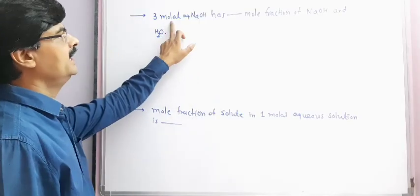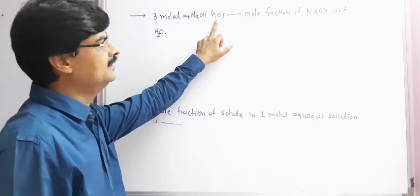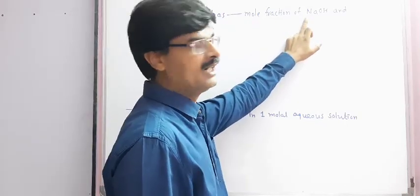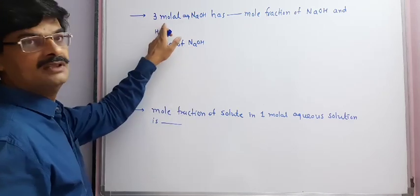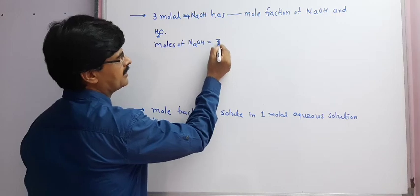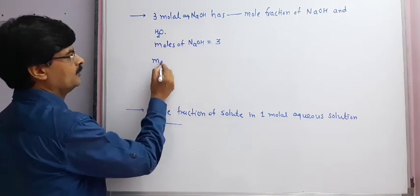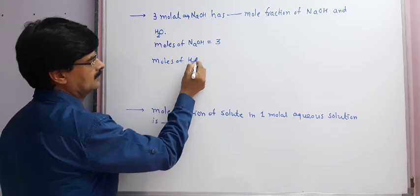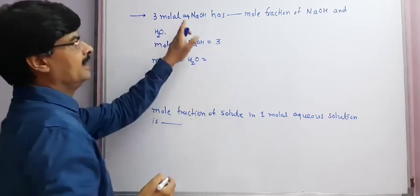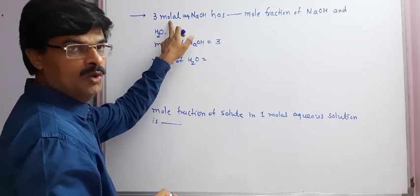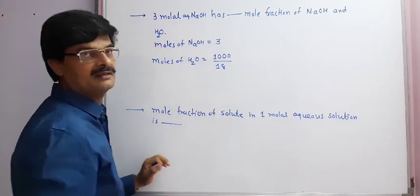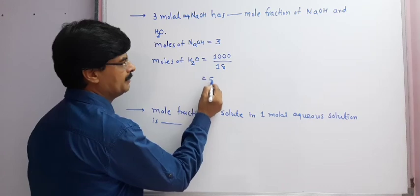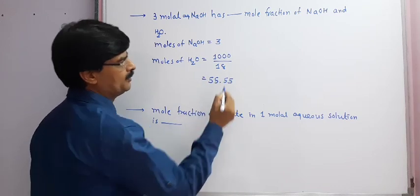In this question, a 3 molar aqueous NaOH solution is given and we have to find the mole fraction of NaOH and H₂O. First, moles of NaOH: as it is a 3 molar solution, moles of NaOH equals 3. To find moles of water (the solvent), we use 1000 gram divided by 18 gram (molar mass of water), giving us 55.55 moles of water.